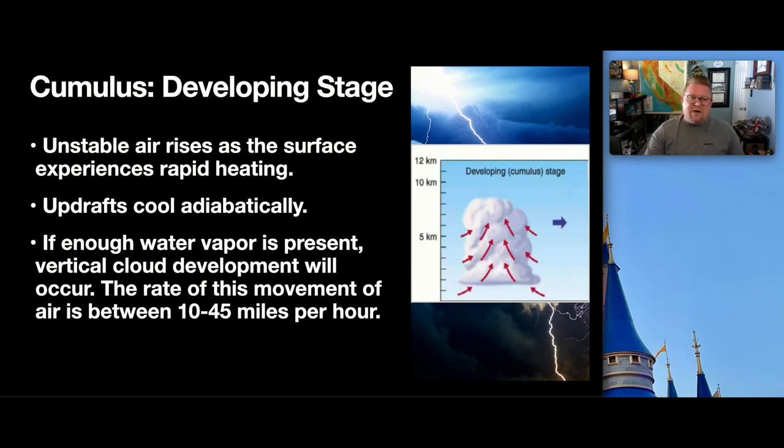So, the cumulus or developing stage. Unstable air will rise as the surface experiences rapid heating. These updrafts of air will cool adiabatically, or will cool as they rise, because they're getting farther away from that heat source. So, if enough water vapor is present, vertical cloud development will occur. The rate of this movement is between 10 and 45 miles an hour. So, it's actually quite quick. I mean, you could watch these clouds begin. You could almost watch them develop upwards, in creating this large column of air. Remember, cumulus implies heaps, or chunks. So, we're seeing this really big, chunky feature developing at its main stage.